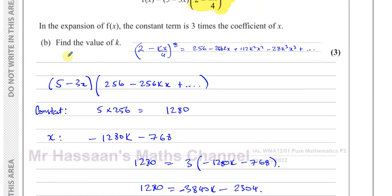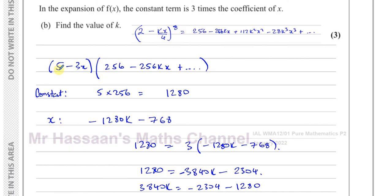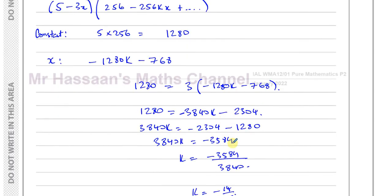To summarise: we used the expansion from part a and only needed the first two terms because those are the ones that generate the constant and x terms when multiplying by (5 minus 3x). The constant comes from 5 times 256, and the x terms come from 5 times minus 256k and from minus 3x times 256. Setting the constant equal to three times the coefficient of x gives us k.